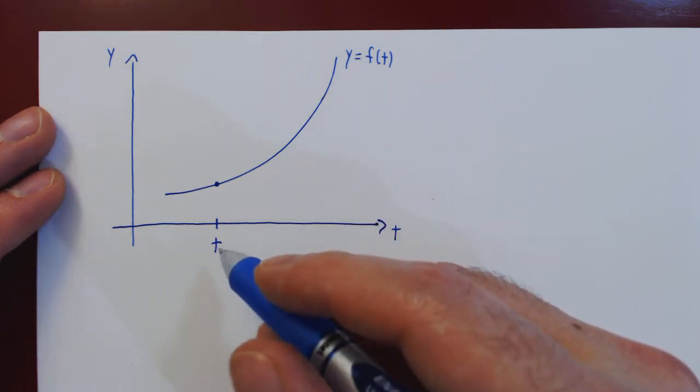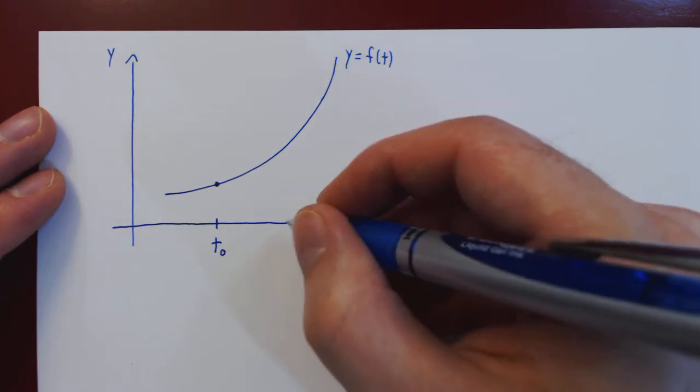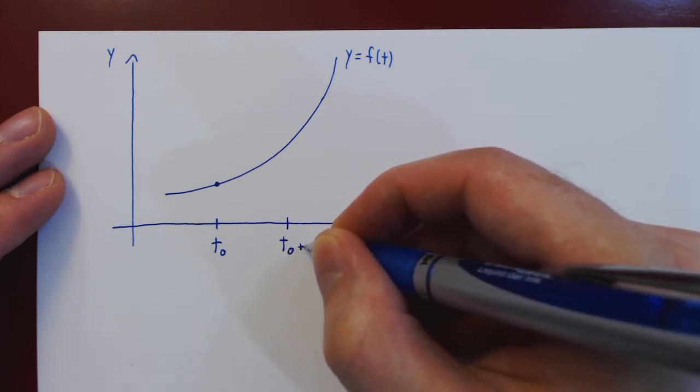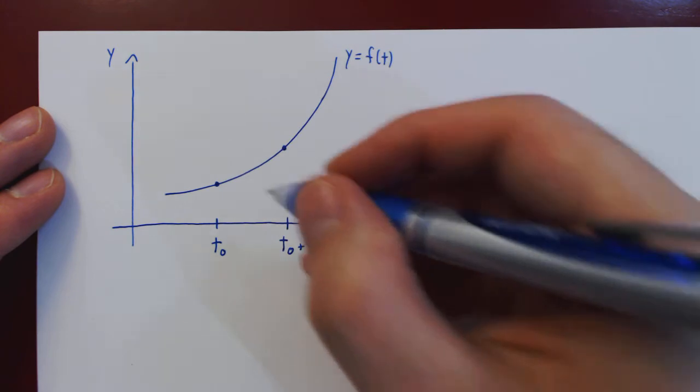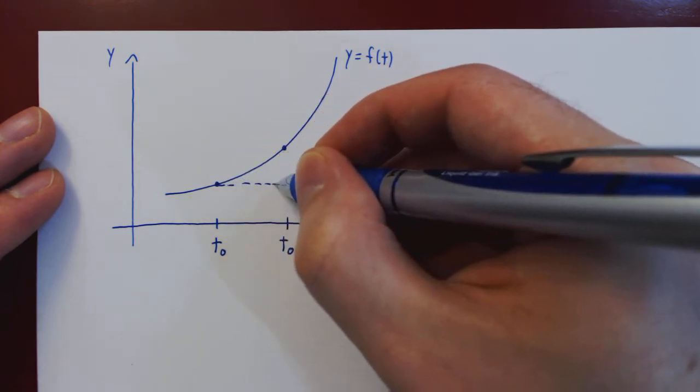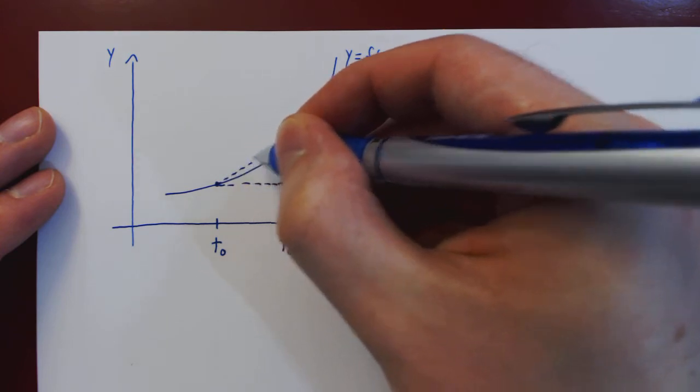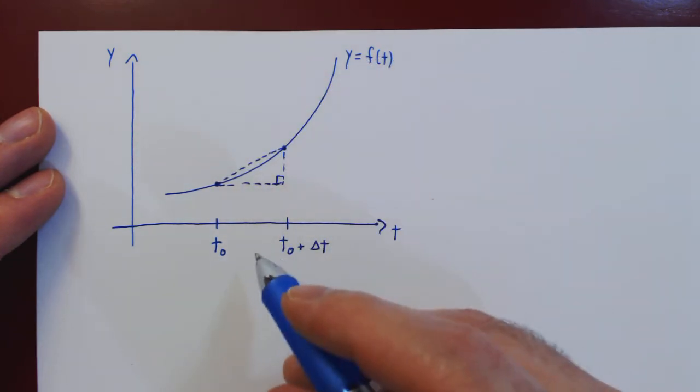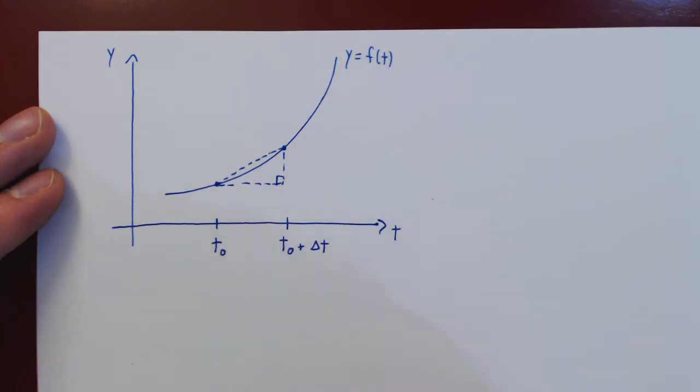So imagine that now we add to t0 a small amount of time, so t0 plus delta t. Now that we have a small interval of time around the point t0, we can find the average velocity of the object over this time interval.